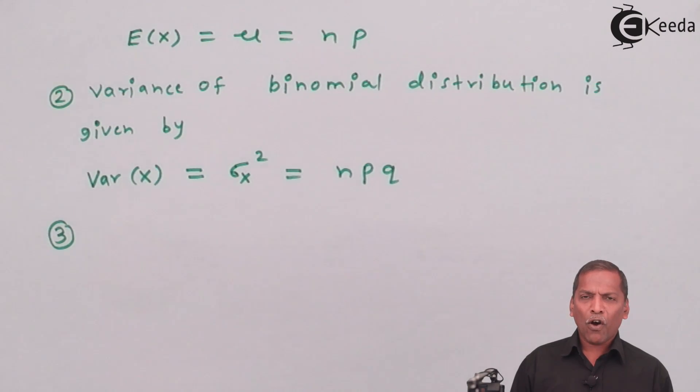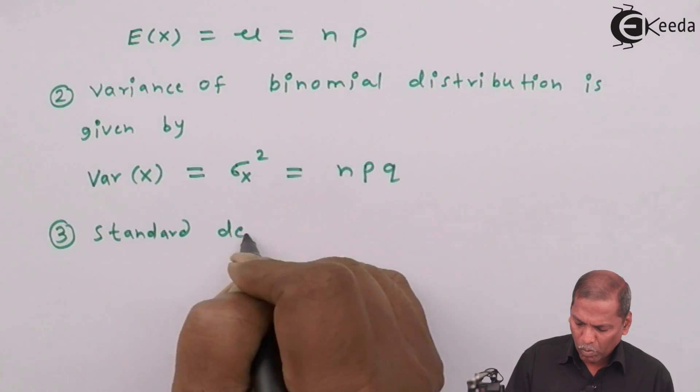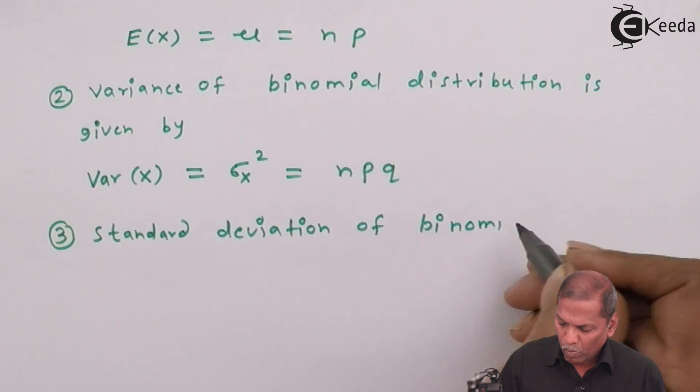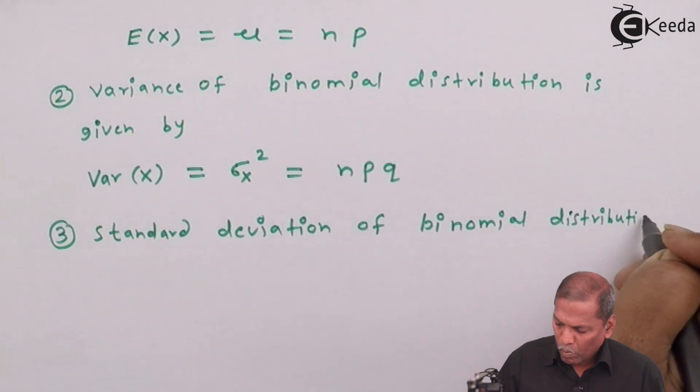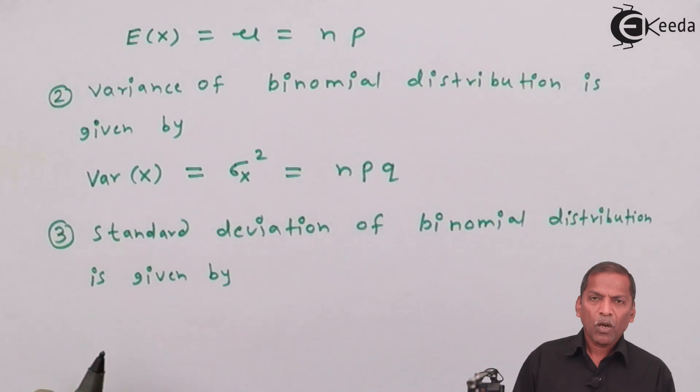The standard deviation of binomial distribution is given by: standard deviation of X equals sigma X equals square root of nPq.